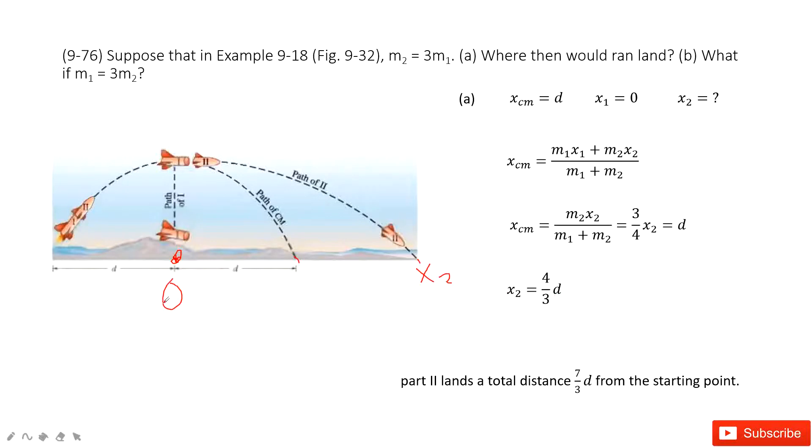So remember, there we choose this part as a reference point. So if we want to see how far away the x2 is from the initial point, we need to add another d. So it becomes 7 over 3 d.